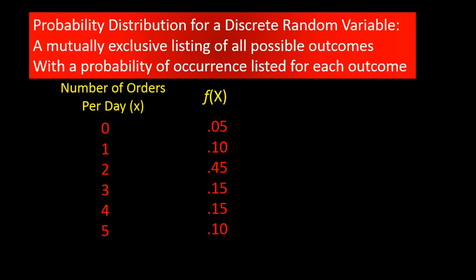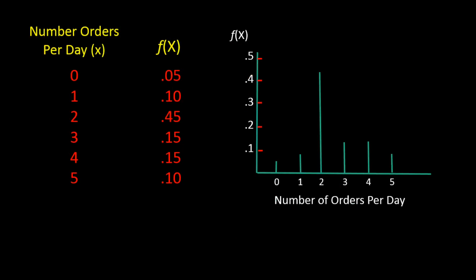Here is another probability distribution — this one is for the number of orders we have for a product. We can see the number of orders are mutually exclusive categories ranging from 0 to 5 orders, and the probabilities associated with each outcome are 0.05 for 0 orders, 0.10 for 1 order, 0.45 for 2 orders, and so on. We can take the tabular listing of the orders per day and create a graphical representation of the information. Both the tabular format and the graphical representation show the same information: the distribution of orders per day and their associated probabilities. Since the outcomes are discrete categories, this is called a discrete probability distribution.